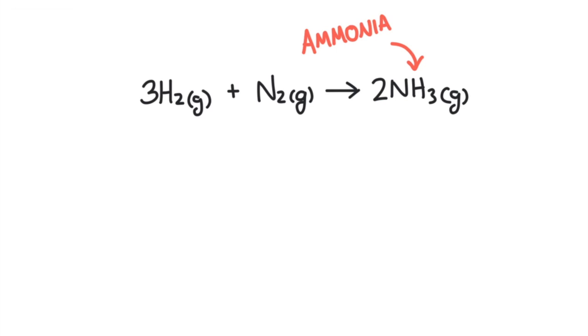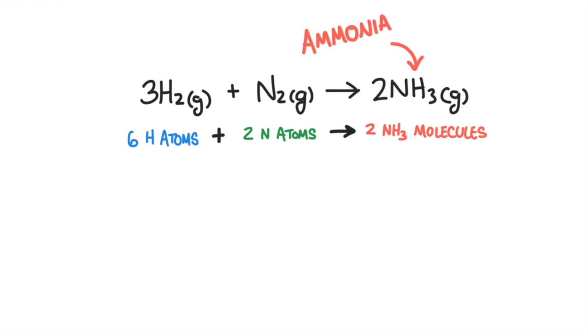We can also talk in terms of atoms. This says that six hydrogen atoms are going to react with two nitrogen atoms to make two molecules of ammonia, which contain six hydrogen atoms and two nitrogen atoms.